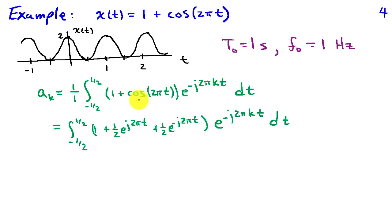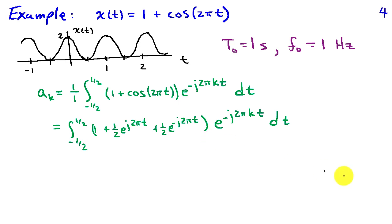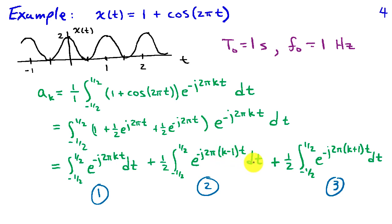It's simplest to expand the cosine using its Euler representation: 1 plus (1/2)e to the j2πt plus (1/2)e to the minus j2πt in the integrand. This leads to three separate integrals. The first is the integral of 1 times e to the minus j2πkt dt. The second is associated with e to the j2πt, giving an integrand of e to the minus j2π(k minus 1)t dt. The third has integrand e to the minus j2π(k plus 1)t dt, combining the exponents in both cases.